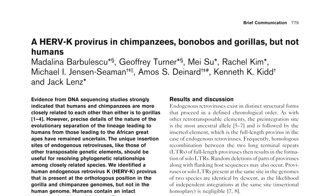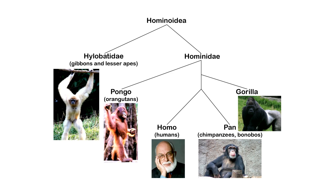An ERV sequence known as HERVKGC1 has been found in both gorillas and chimpanzees, but is not present in human DNA. Gorillas diverged from an earlier common ancestor to us, and chimps from a later one, so this ERV must have been present in that earlier common ancestor, as the chances of the virus inserting itself twice in the exact same place is astronomical. According to the creationists, this means that humans must have the ERV, and we don't, so we're not related.